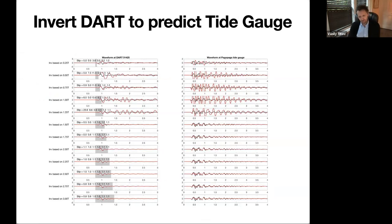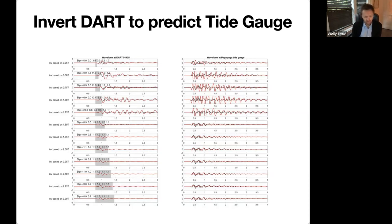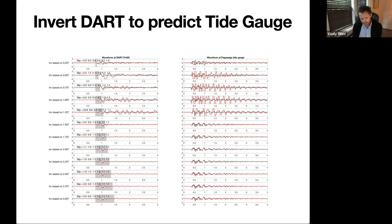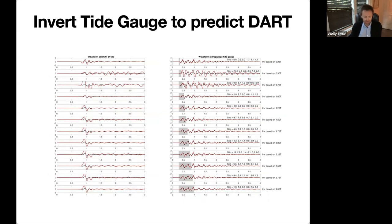There are so many tide gauges that it would be nice to add them into the inversion routine, but we've tried and it doesn't work very well. Using just one deep-ocean DART detector and inverting for the source gives a good, stable solution for the Samoan 2009 event — and the same solution also computes well for the tide gauge at Pago Pago. Trying the same inversion with tide gauges alone gives a stable tide gauge solution, but doesn't guarantee a stable DART prediction, meaning the propagation solution remains uncertain.